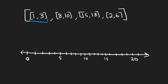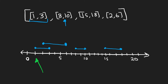We have interval 1–3, then 8–10, then 15–18, and finally 2–6. Placing them on the number line makes it visually obvious that 1–3 and 2–6 are overlapping — I'll draw 2–6 above 1–3 to make that clear.